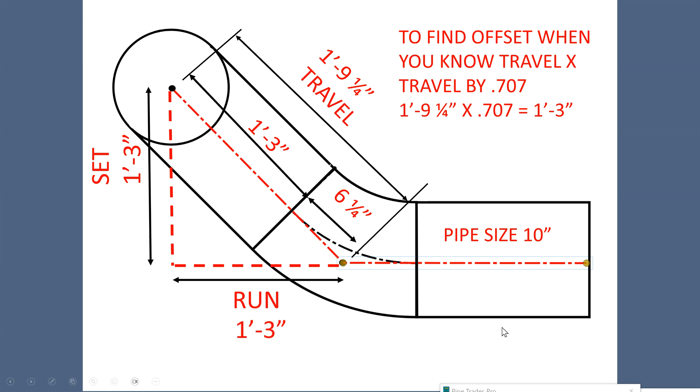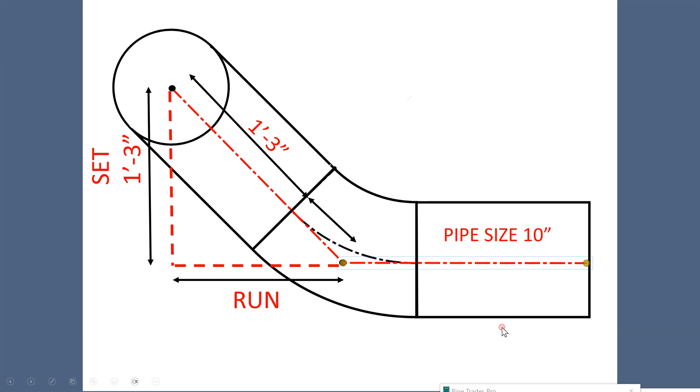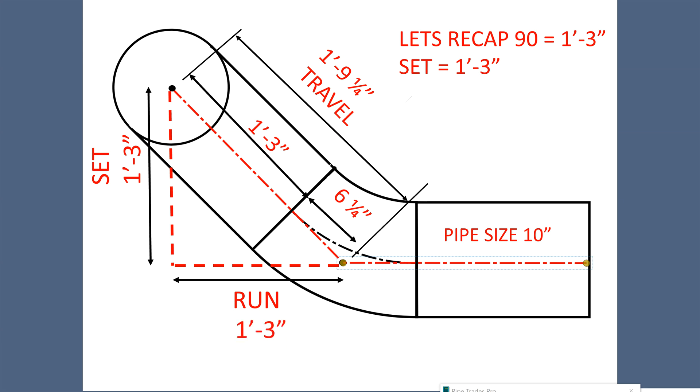So we can see we have something going here. Ten inch, set and run are equal. One foot three, six and a quarter. One foot nine and a quarter. The 90 equals one foot three. The set equals one foot three. Kind of a revelation there.